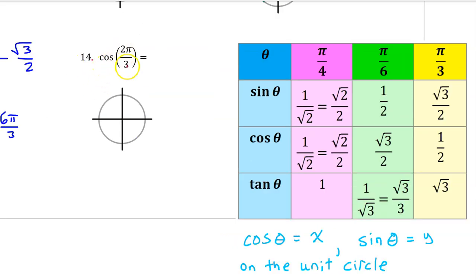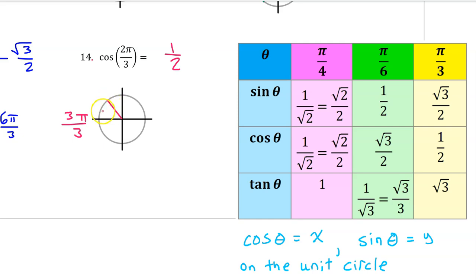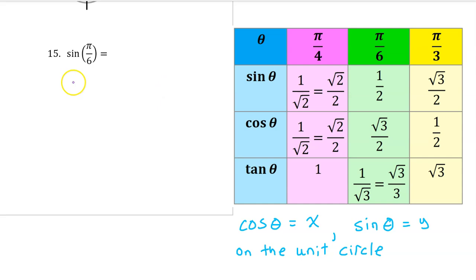For number 14, the cosine of 2 pi over 3 will be the same as the cosine of pi over 3, which is 1 half — except it might be negative depending on the quadrant. Pi is 3 pi over 3, so 2 pi over 3 is one multiple before 3 pi over 3, in the second quadrant. Cosine is the x value, and x values are negative in the second quadrant, so the answer is negative 1 half. For number 15, the sine of pi over 6 is right on the chart — it is 1 half.